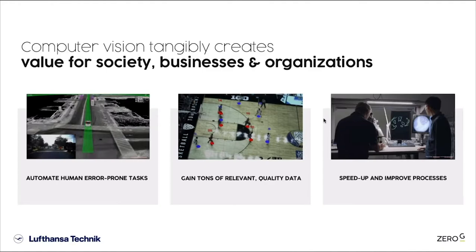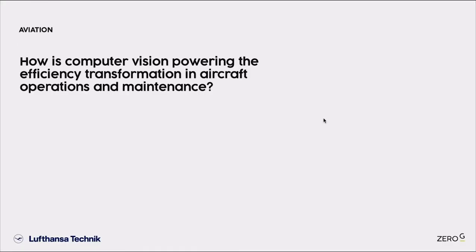Those are three examples of where computer vision is used outside of the aviation industry. Computer vision has a tangibly positive impact on society, business, and organizations if trained and developed properly. Now I'll highlight two examples from the aviation industry where we use computer vision to improve the efficiency and quality of aircraft operation and maintenance, starting with the turnaround process.